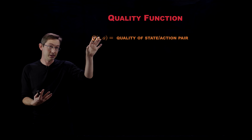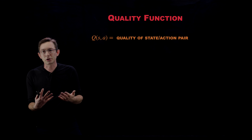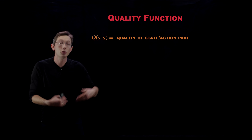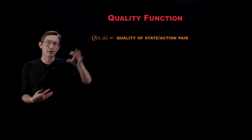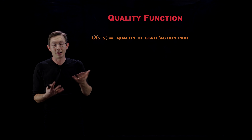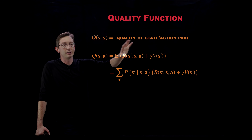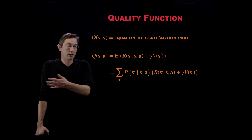Before jumping into gradient-free optimization methods culminating in Q-learning, I want to recap a couple of topics from the last few lectures. The first important thing is the quality function Q, which tells you the joint quality or value of taking an action a given a current state s. The value function V tells you the value of being in state s assuming you take the best action, while the quality function Q is richer — it contains information about the quality of being in state s for any action you might take.